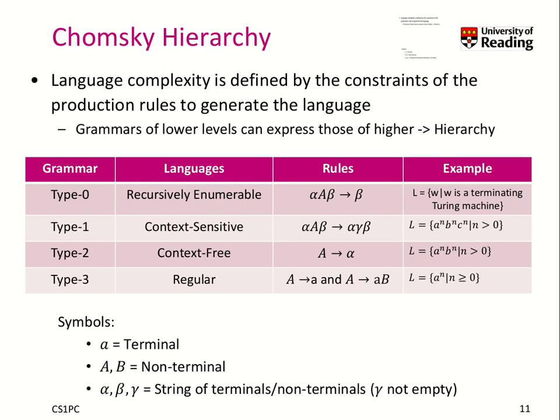The next language, type 2, is context-free. Here A goes to alpha, and alpha is a string of terminals and non-terminals. That's different from regular languages, where we only have two types of rules: a non-terminal goes directly to a terminal, or a non-terminal goes to a non-terminal followed by a terminal. In context-free you can create arbitrary long strings on the right-hand side and include as many non-terminals as you like. This allows you to generate a language like A to the power of n and B to the power of n.